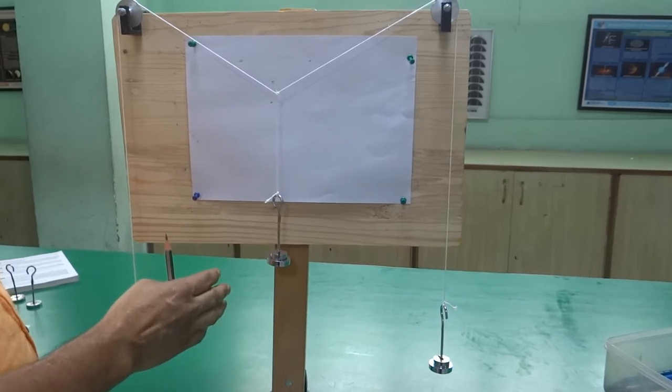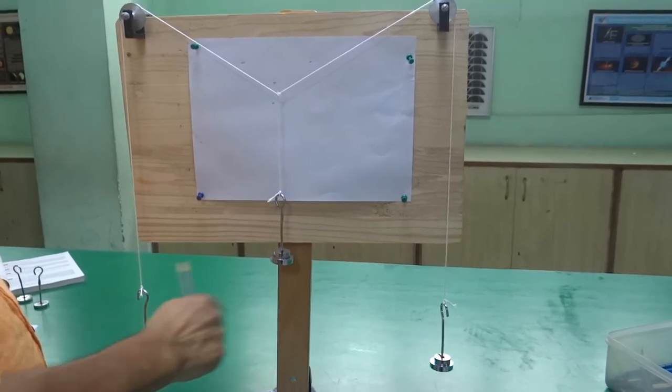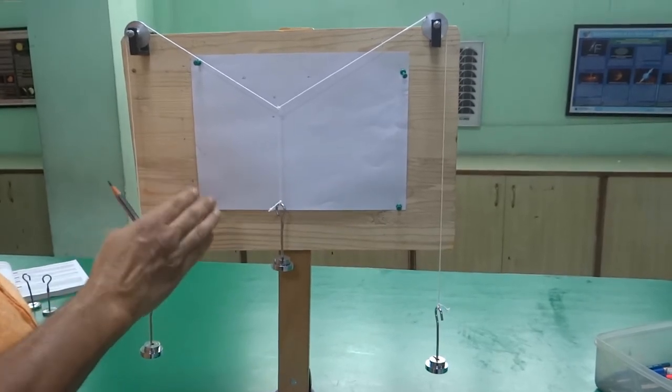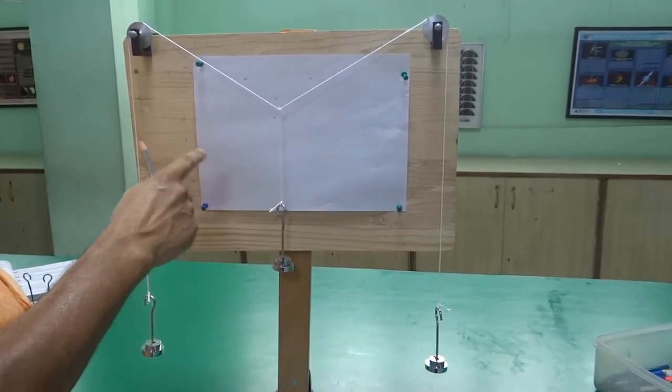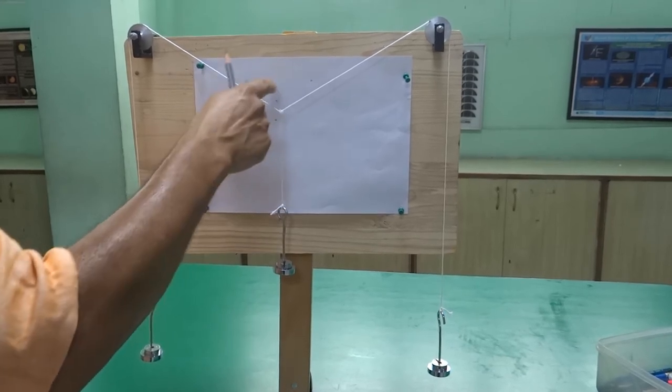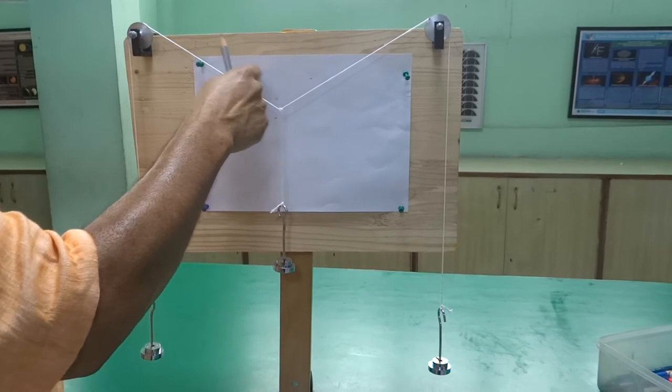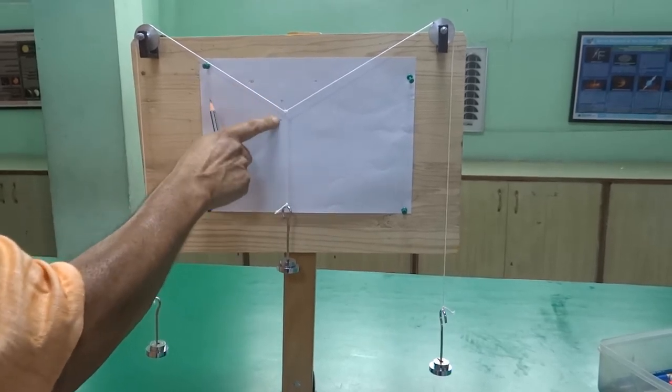If the system is not in equilibrium, then increase the weight on the sideways again. And check it again until the system comes in equilibrium. Once the system comes in equilibrium, follow the same steps.